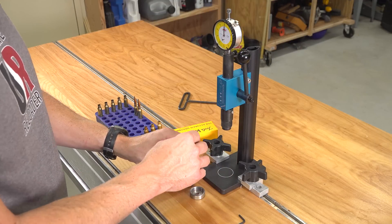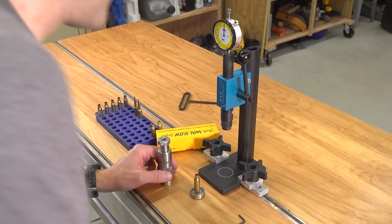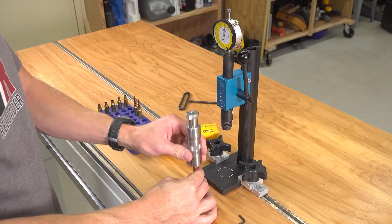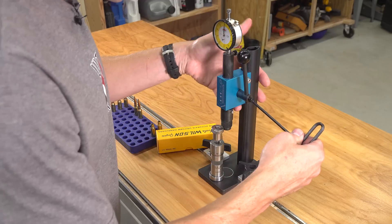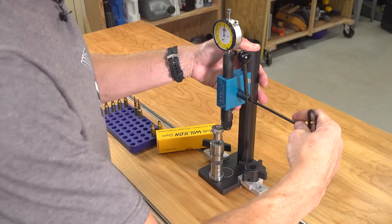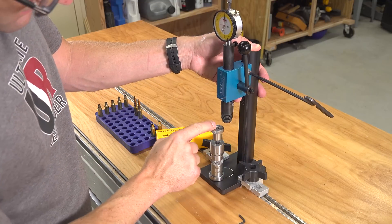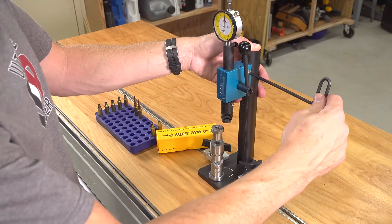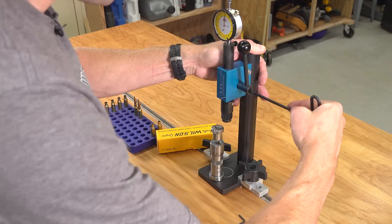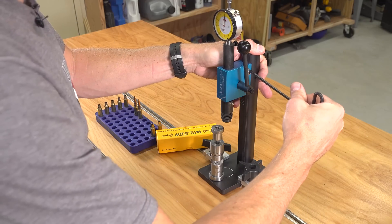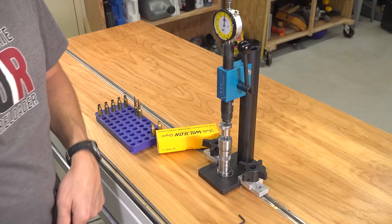And then what we're going to want to do is again take a bullet, put everything together like we're going to be seating a bullet. You can see there we need to go up a little bit more and so we'll just do that quickly. And we just need to be slightly above the seating stem top there. I'm going to say that looks pretty good. Now we're ready to seat a bullet.